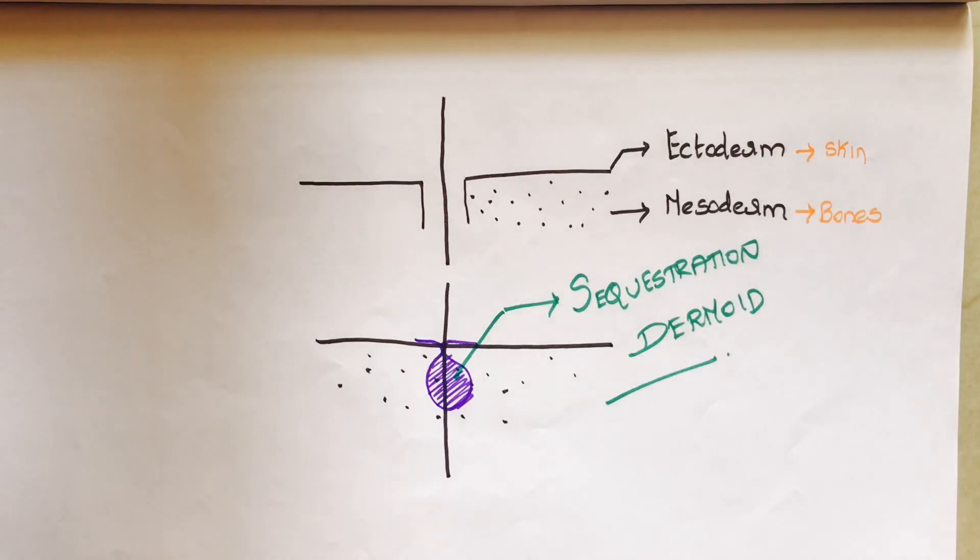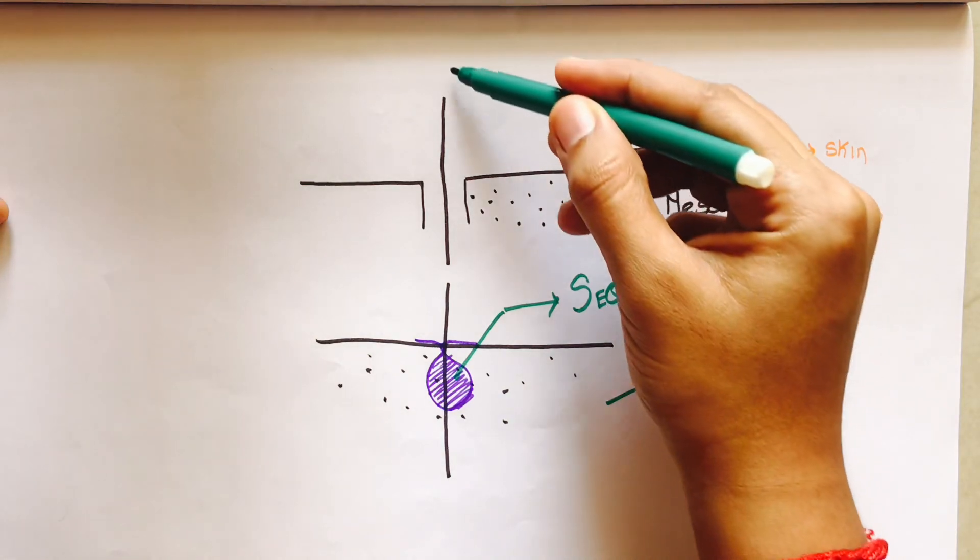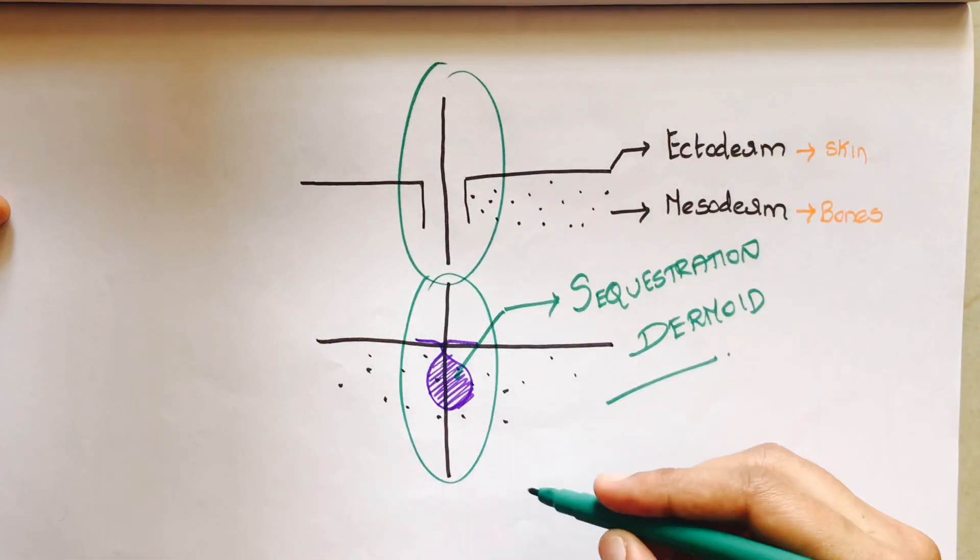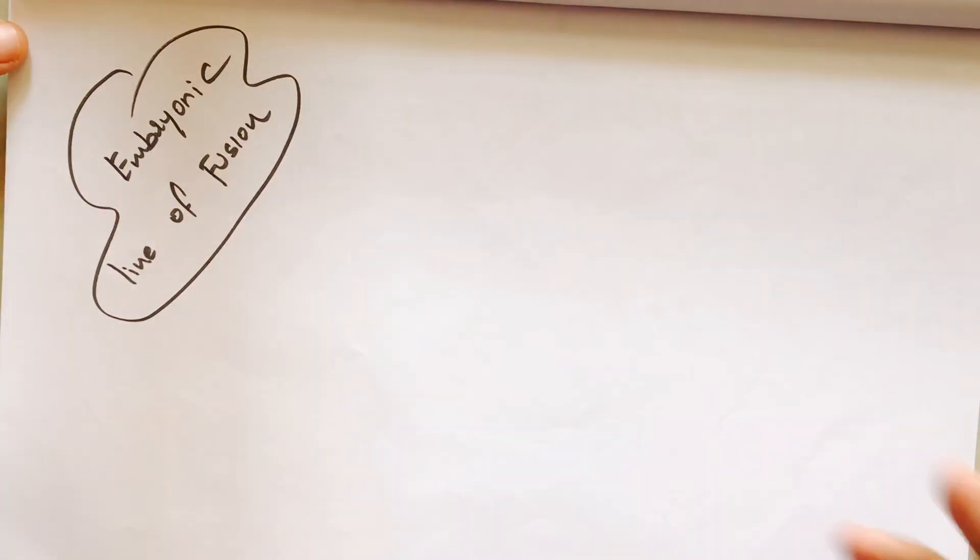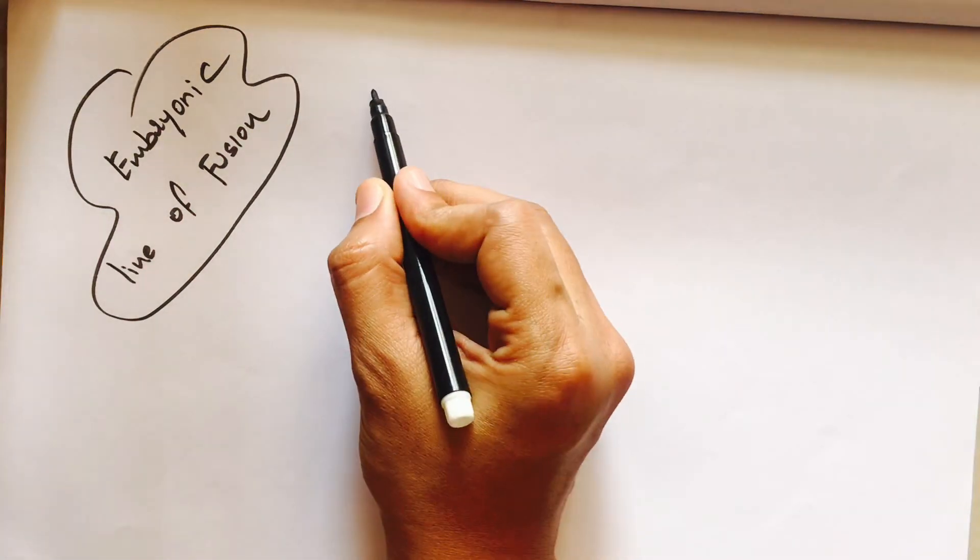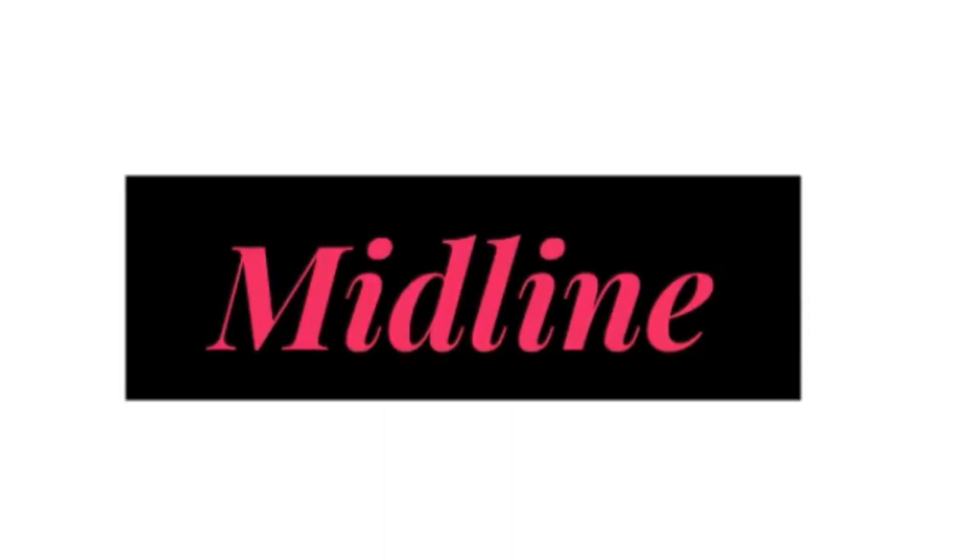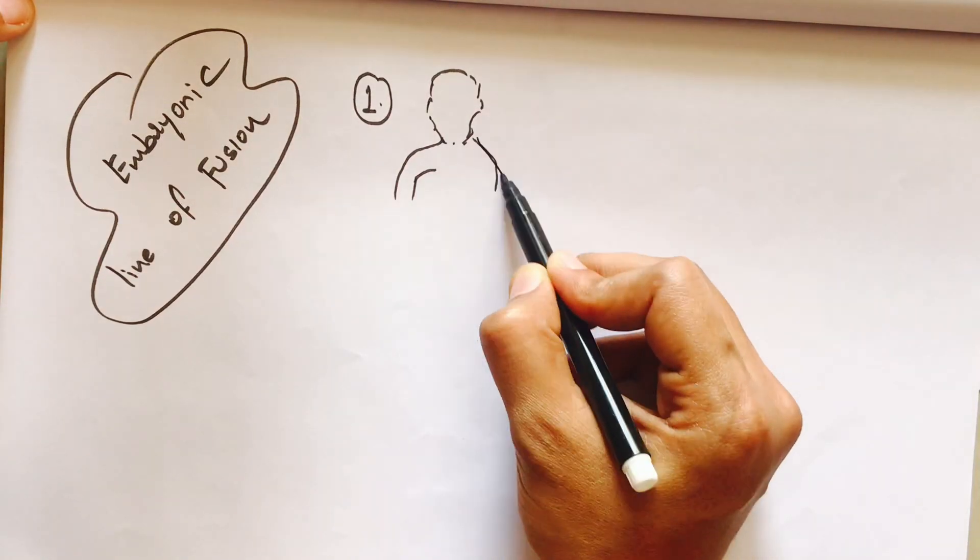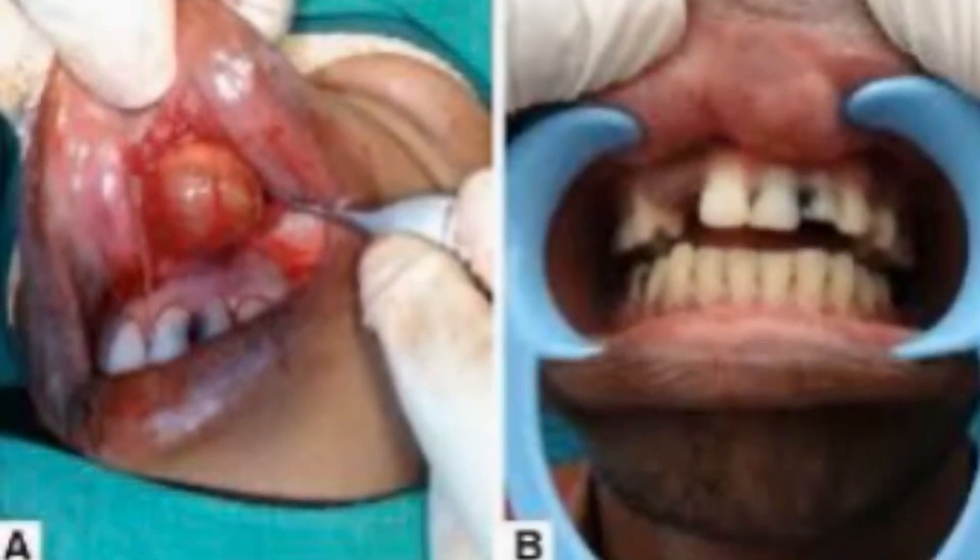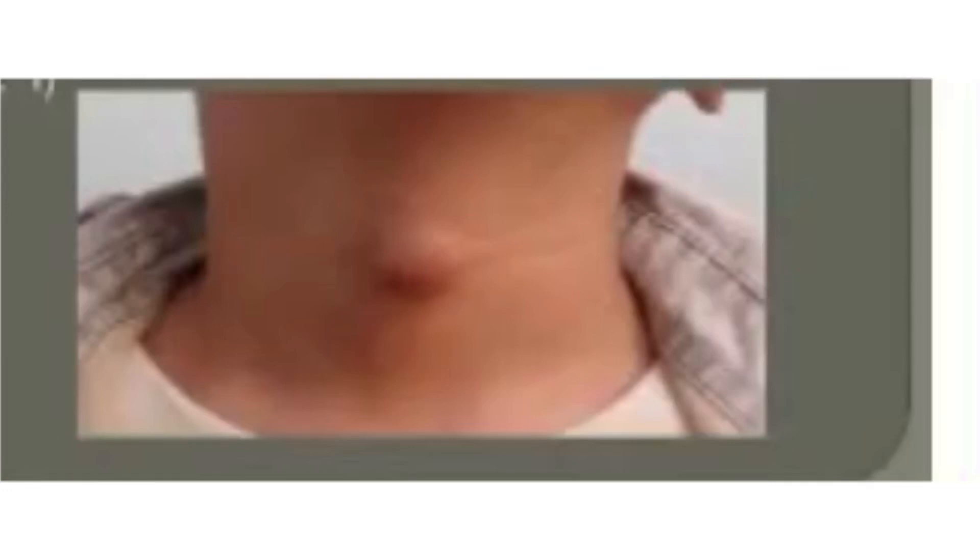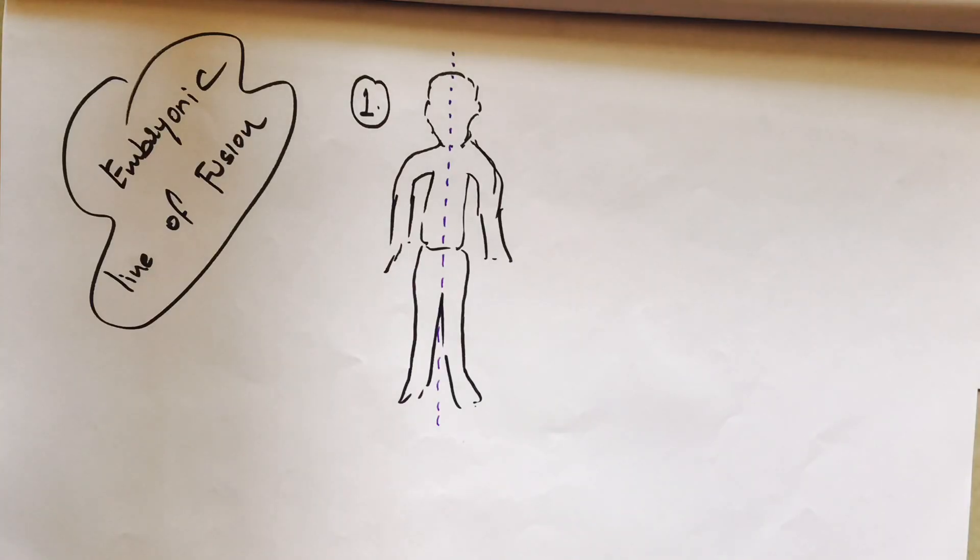A few examples of this embryonic line of fusion or midline: number one is the midline of the body, especially the neck. Here are a few examples of dermoids present in the midline of the body.